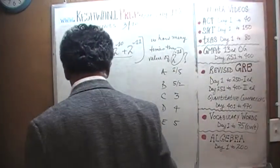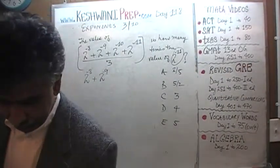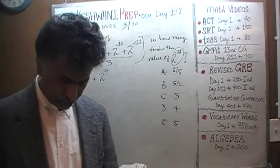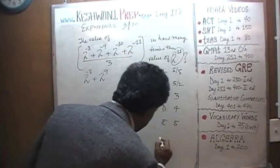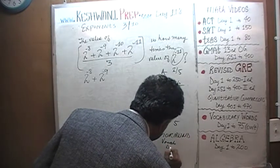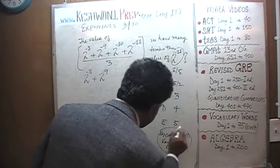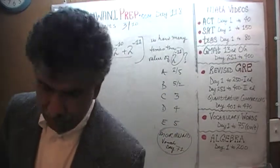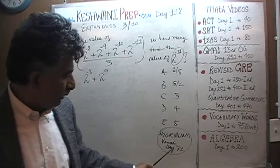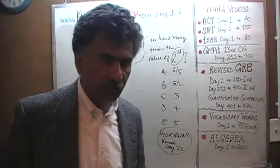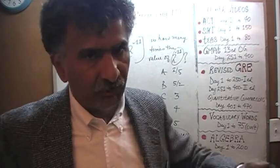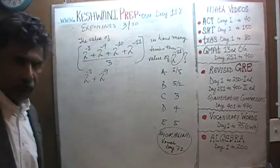That marker was moribund. I don't know if you ever learned this word — we did learn it. The marker I got rid of was moribund. Just type in vocabulary words, whichever exam you are preparing for — GRE vocabulary words, day number 71 — and watch the video where we learned the word moribund. Moribund means almost dead; it's at the verge of dying, going to take its last breath. That marker was moribund — it was almost dying, I had to get rid of it. Anyway, that was a slight digression.